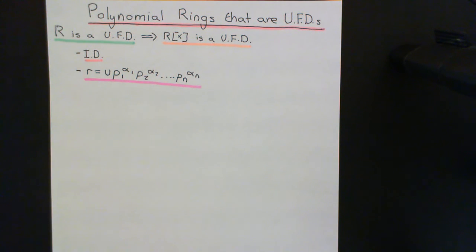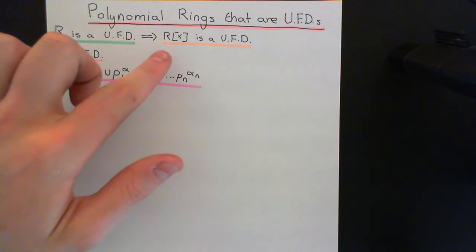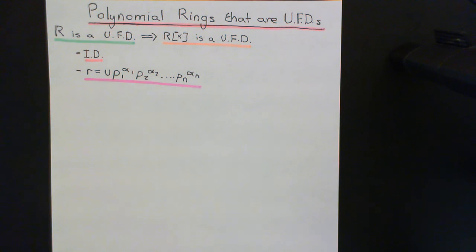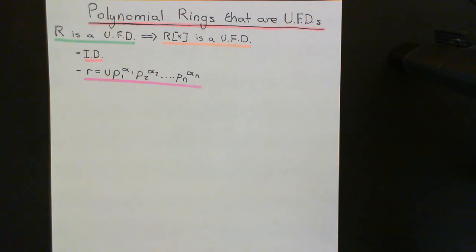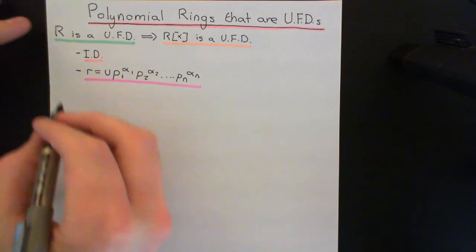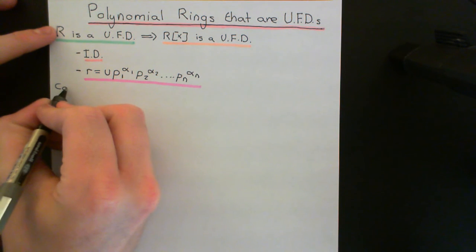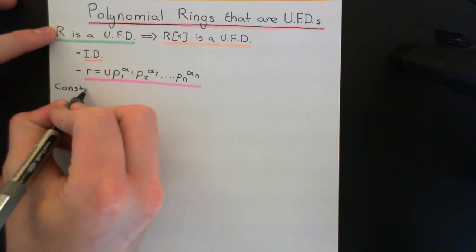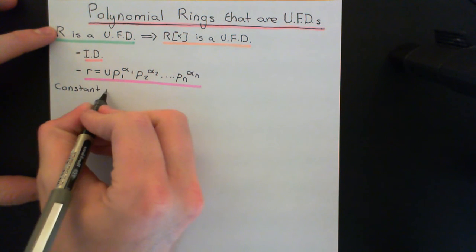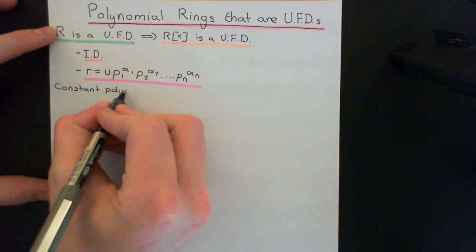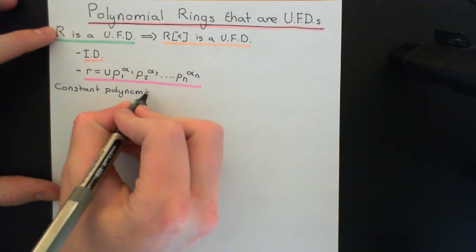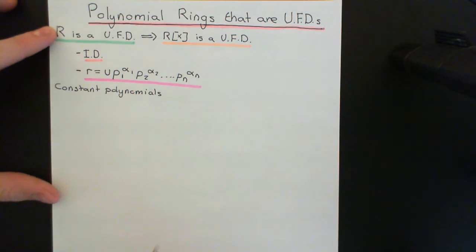Let's now begin. We're going to consider the elements of this ring of polynomials R adjoin X, and divide them initially into two broad classes. Firstly, there are the constant polynomials, and then there are the non-constant polynomials. We'll start off with the constant polynomials, because this is the easier bit. Then we'll move on to the non-constant polynomials, which is where the more ingenious tactics come into the proof.